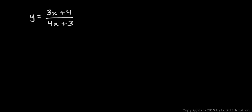Here's a relatively straightforward problem involving the quotient rule for derivatives. We're told that y equals 3x plus 4 over 4x plus 3, and we need to find dy dx. So just apply the quotient rule, and the way I remember the quotient rule is low d high minus high d low all over the denominator squared.